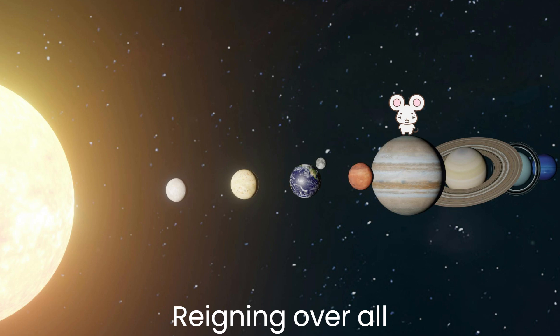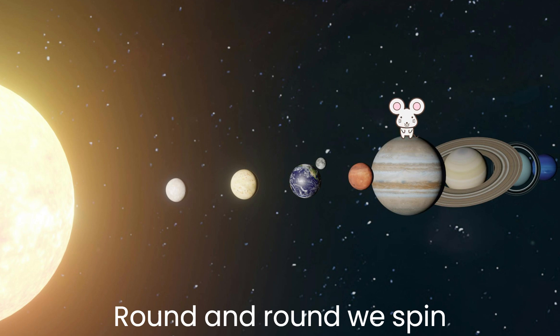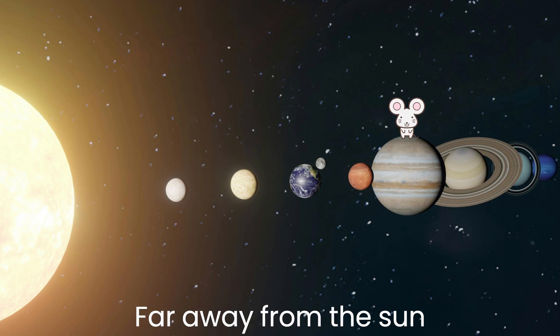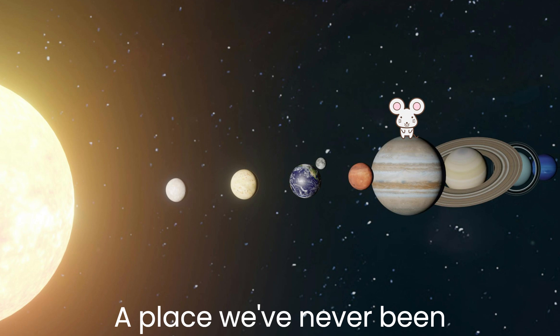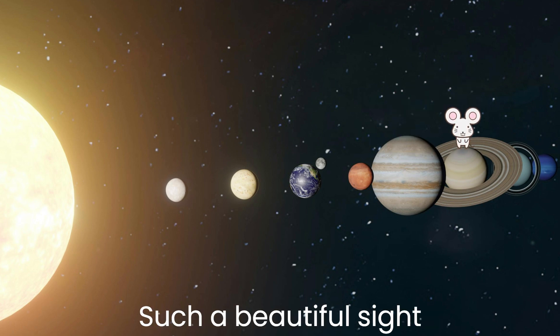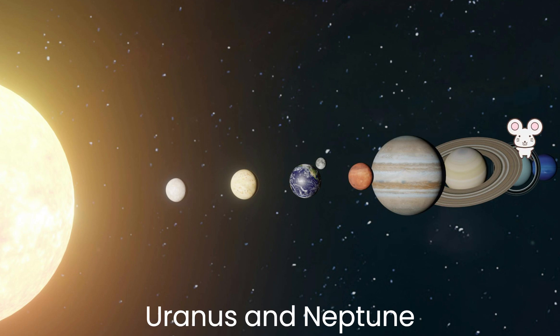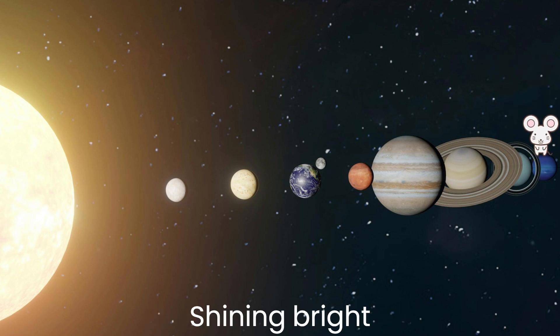with giants reigning over all. A cosmic journey round and round we spin, far away from the sun, a place we've never been. Saturn's rings, such a beautiful sight. Uranus and Neptune shining bright.